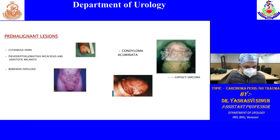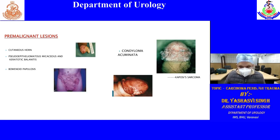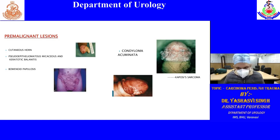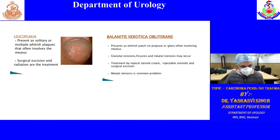Pre-malignant lesions and differential diagnoses include cutaneous horn, pseudo-epitheliomatous mycosis, keratotic balanitis, bowenoid papulosis, condyloma acuminata, Kaposi sarcoma, leukoplakia, and BXO (balanitis xerotica obliterans).